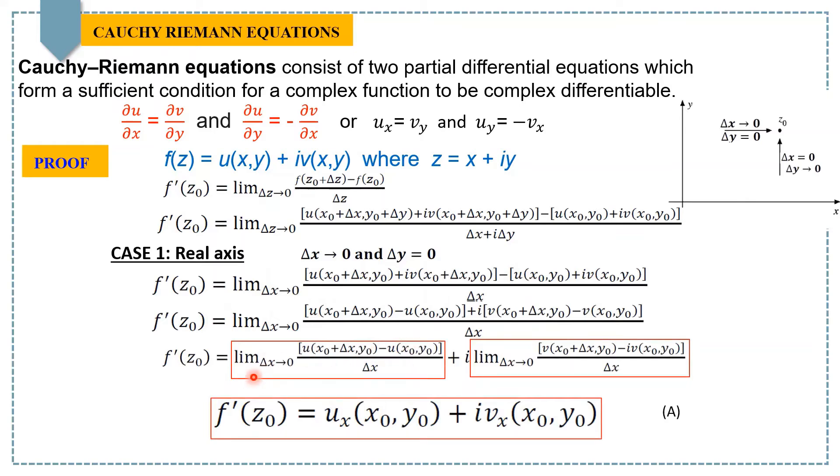Here, you can see the first part is a real part and the second part is an imaginary part. Now, here we can identify partial derivatives with respect to x in both parts. You see, this is a partial derivative of u with respect to x and this is a partial derivative of v with respect to x.